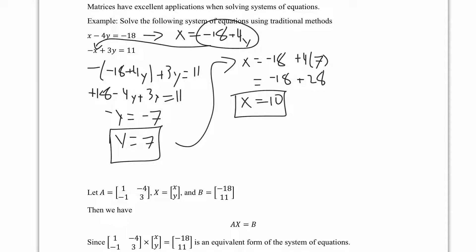The way we create these matrices: the right-hand side values get stacked into matrix B, the coefficients of the variables — 1, -4, -1, and 3 — go into matrix A, and the variables x and y form the variable matrix X.